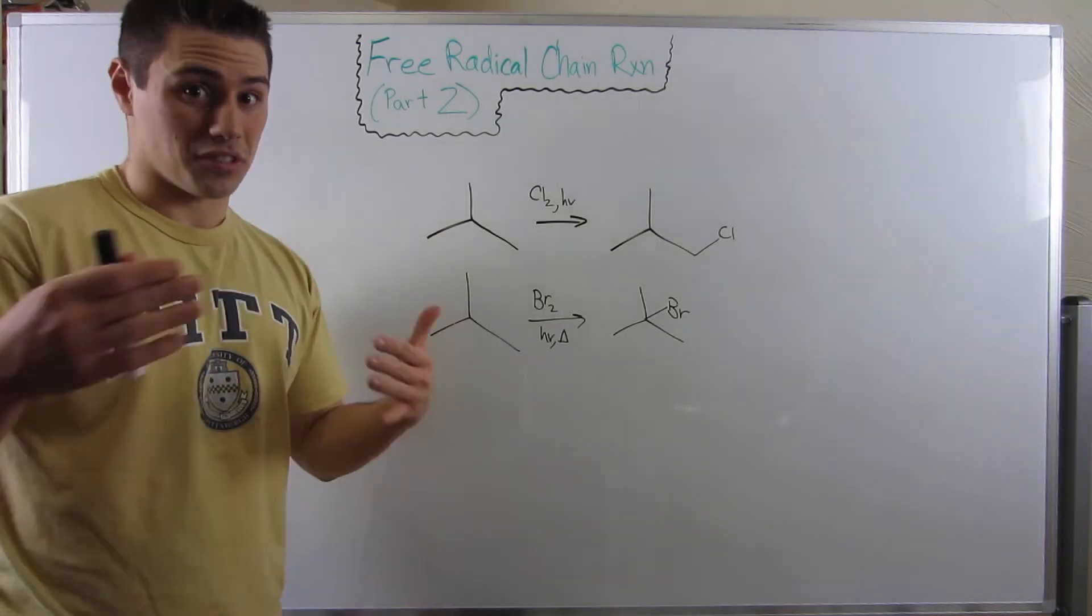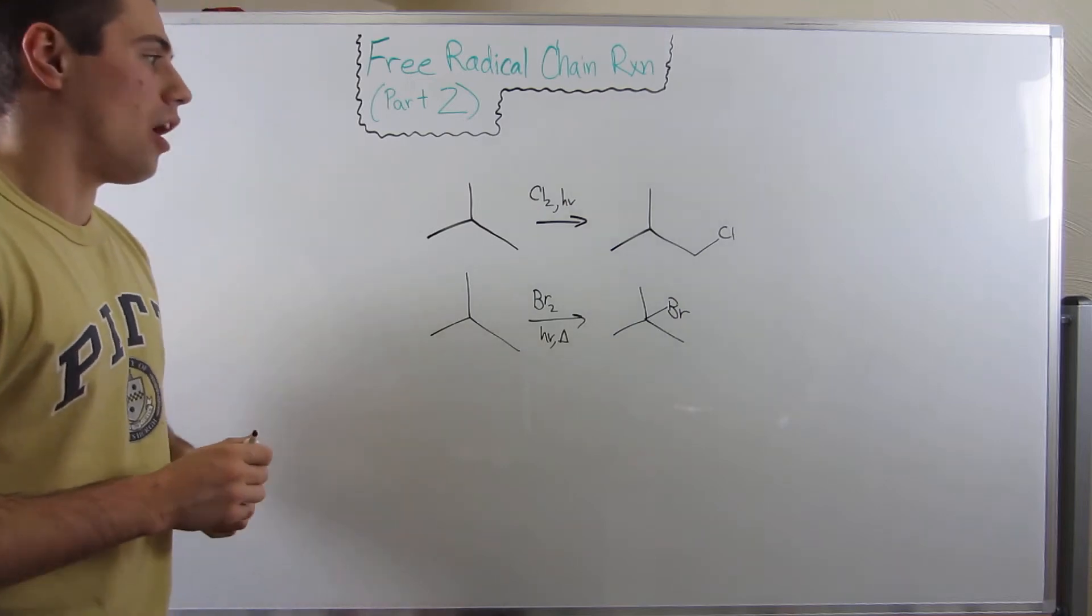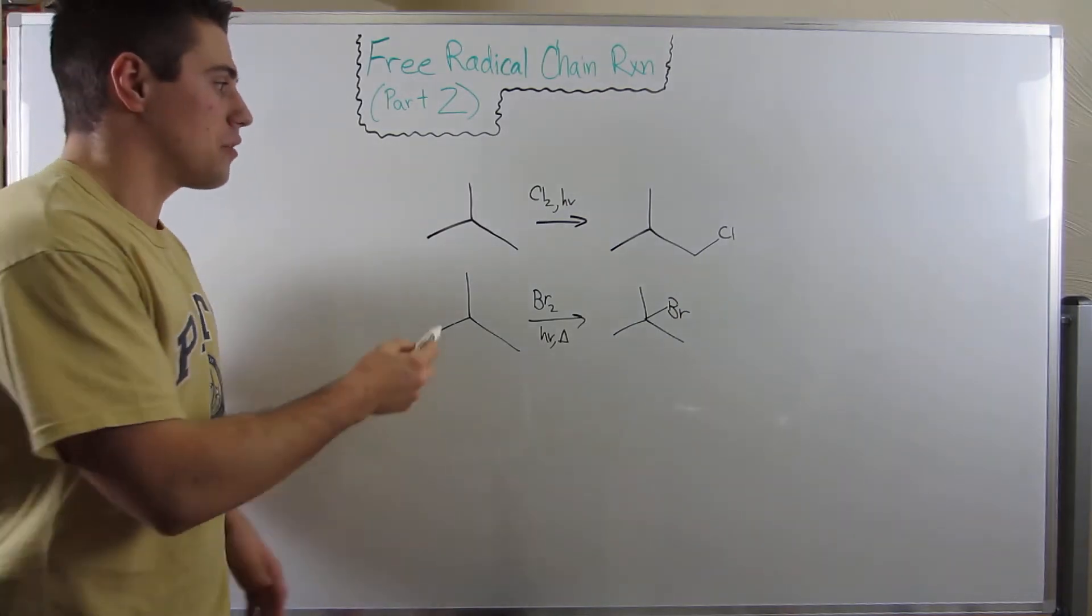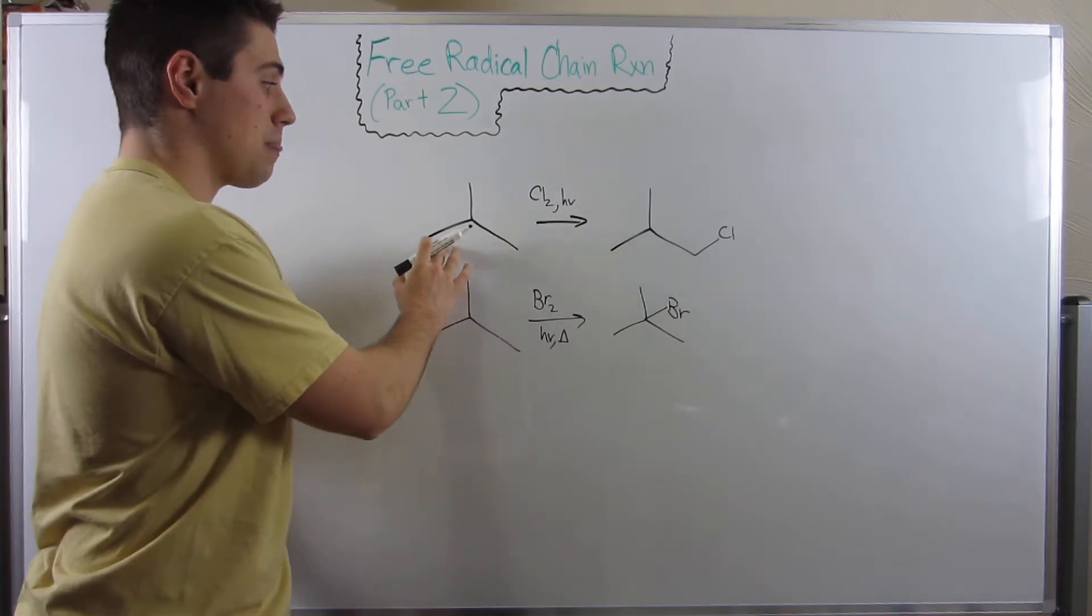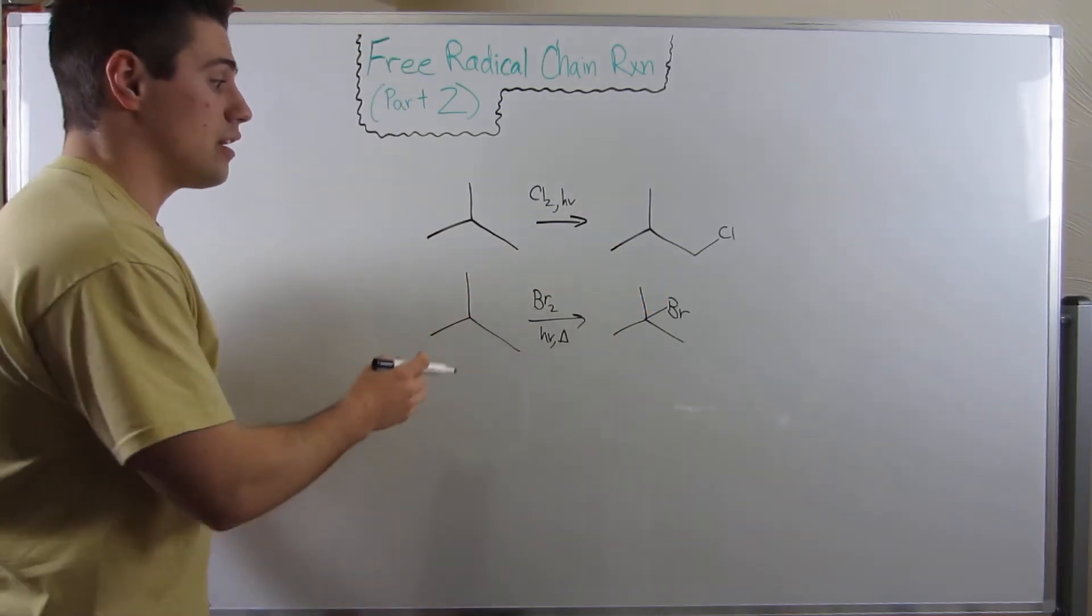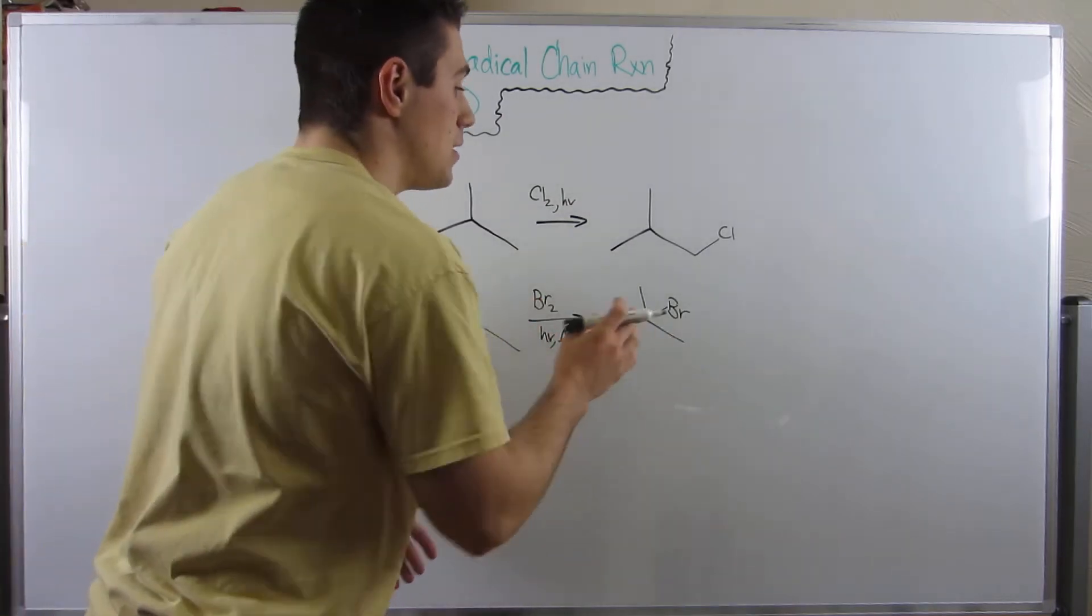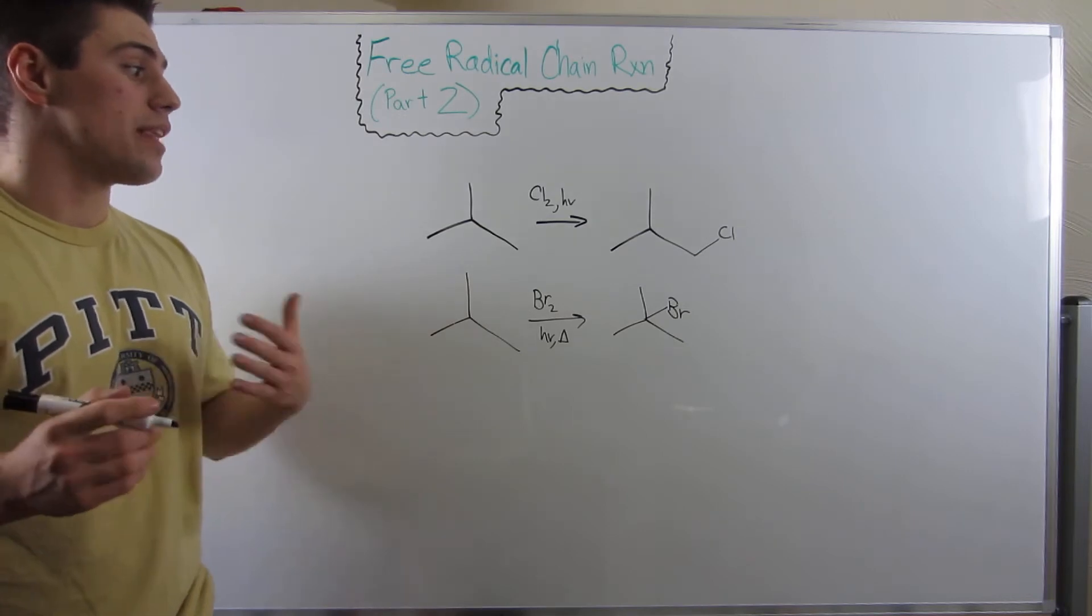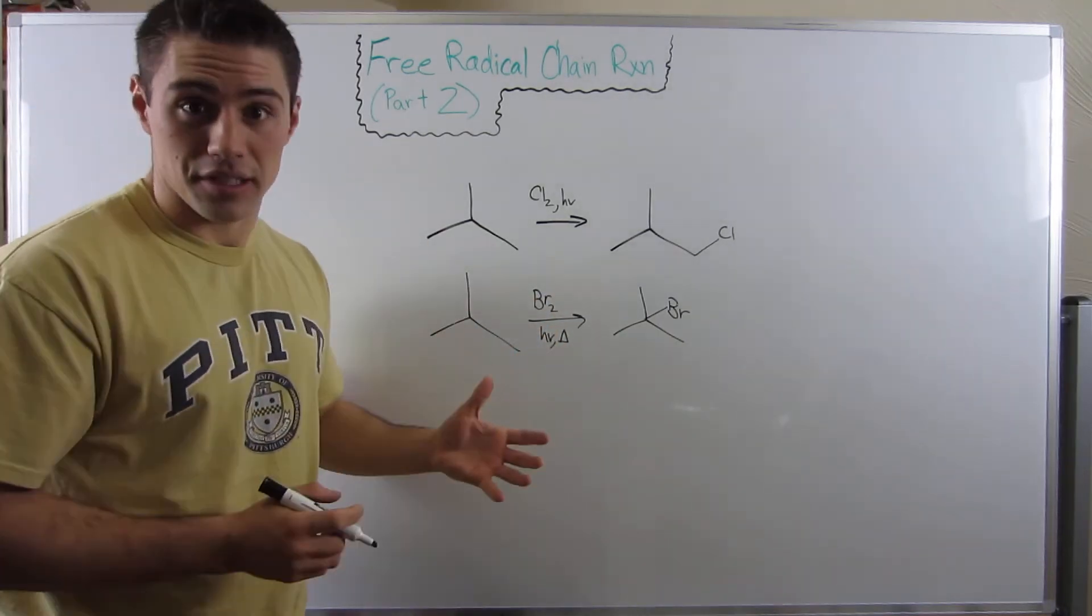Time to resolve this cliffhanger, because I bet it's been absolutely killing you guys. So the last time we talked, we saw that if we were to free radical chlorinate isobutane, we get isobutyl chloride. However, if we were to free radical brominate isobutane, we get t-butyl bromide. Now we're going to actually dig into why we see this discrepancy.